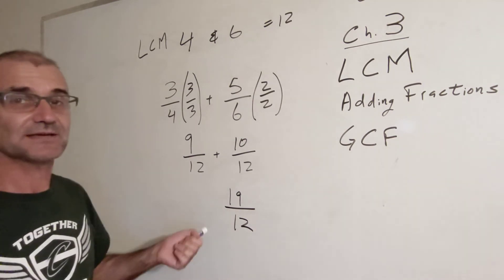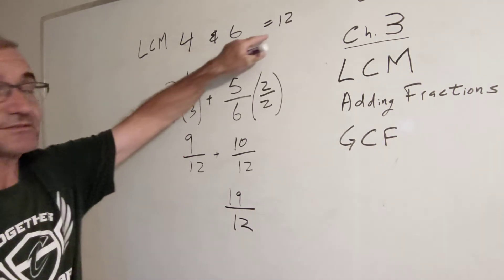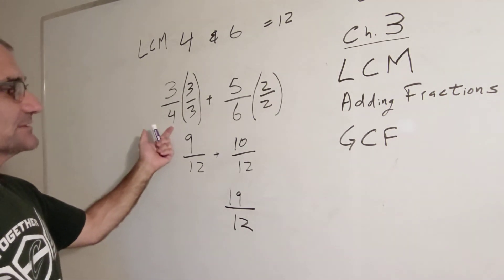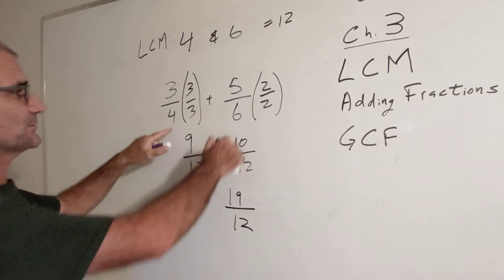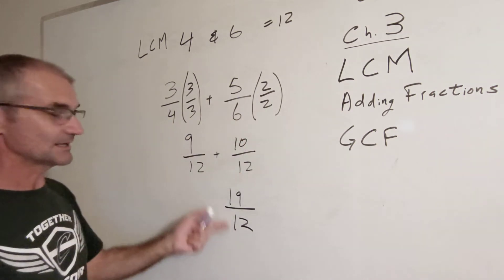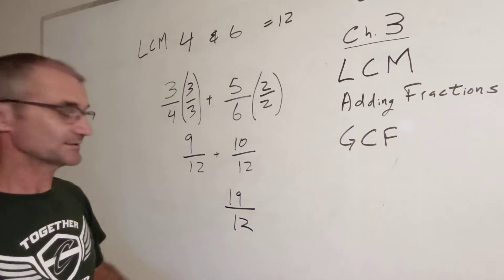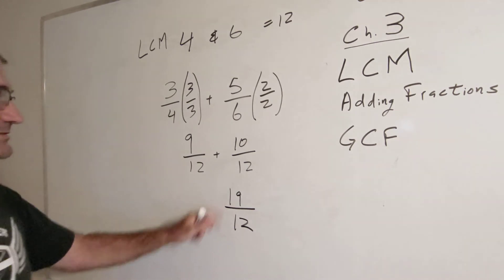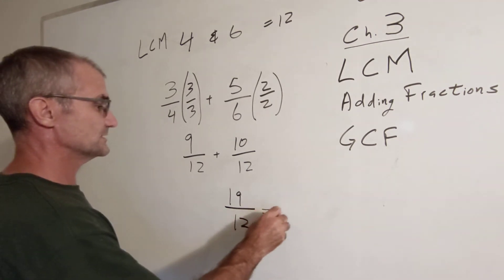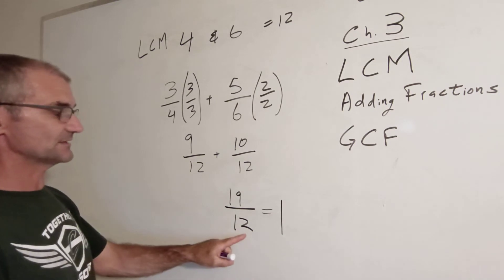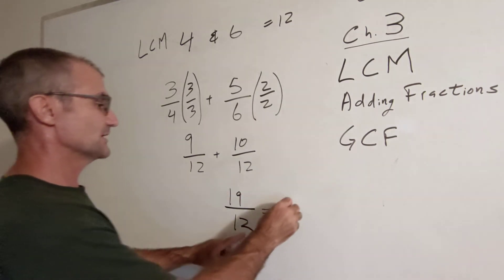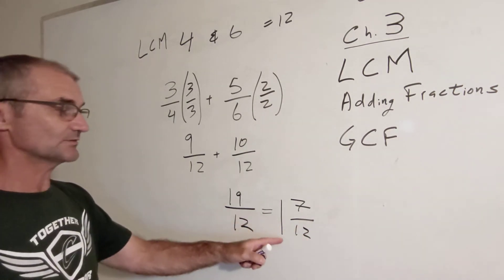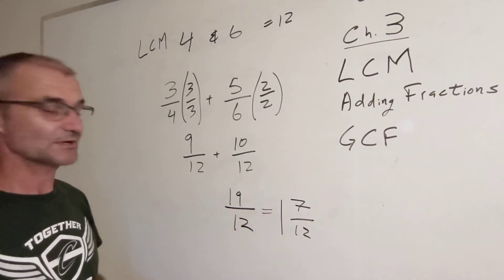Can it be reduced? It can't be reduced because I used the least common multiple. If I had used another multiple that wasn't the least common multiple between 4 and 6, then I could have reduced it. I can turn it into a mixed number — 12 goes into 19 one time with 7 left over. So 19 twelfths is equivalent to 1 and 7 twelfths.